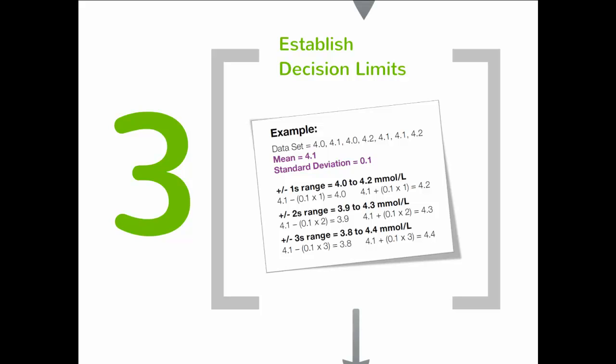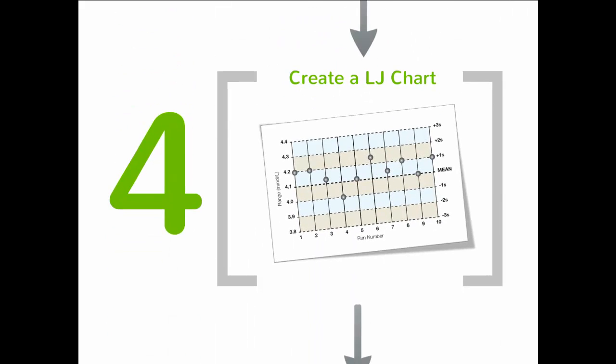Using the mean and the ±3s range, a Levy-Jennings chart is created for each test and each level of control. Daily QC data is plotted on this chart, which allows the laboratory to monitor the precision of their test procedures.